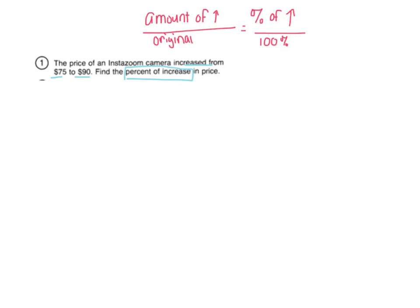Let's start by figuring out what was the original amount the camera started at and then what is the new amount — what did it go up to? In this case, the original amount was $75 and then it went up to $90, so that's my new amount. This is going to allow me to figure out how much it went up by, or the amount of the change.